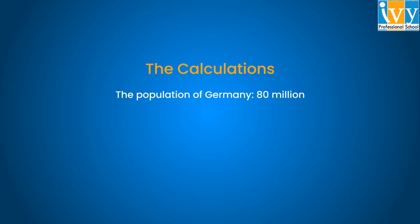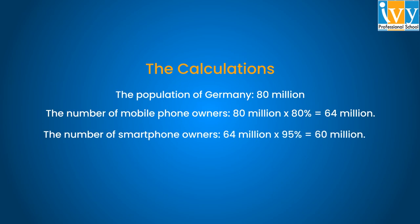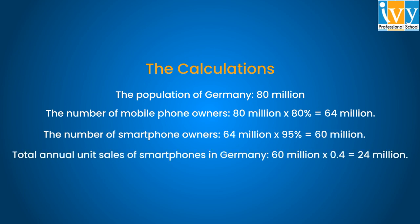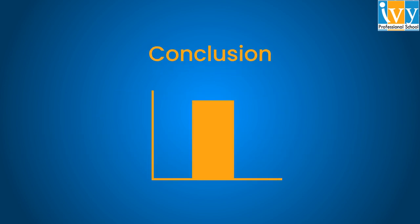Here are the calculations: the population of Germany is 80 million. The number of mobile phone owners is 80 million × 80% = 64 million. The number of smartphone owners is 64 million × 95% = 60 million. Total annual unit sales of smartphones in Germany: 60 million × 0.4 = 24 million. In reality, in 2020, 22.9 million smartphones were sold in Germany. Getting your answer this close is good, but in real instances do not try too hard to get close — the only thing that matters is a structured approach.